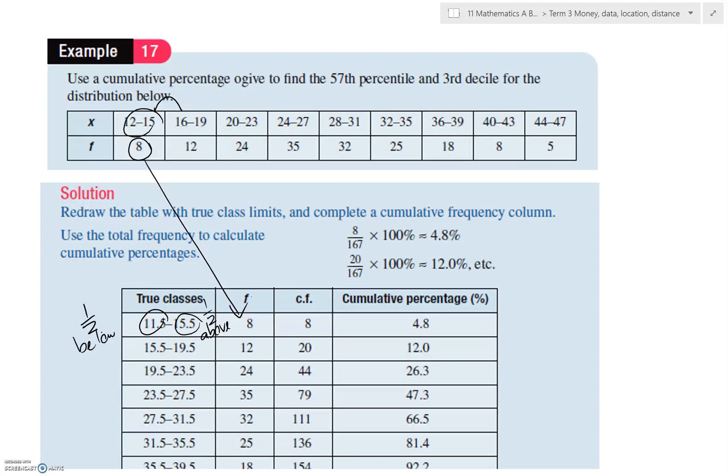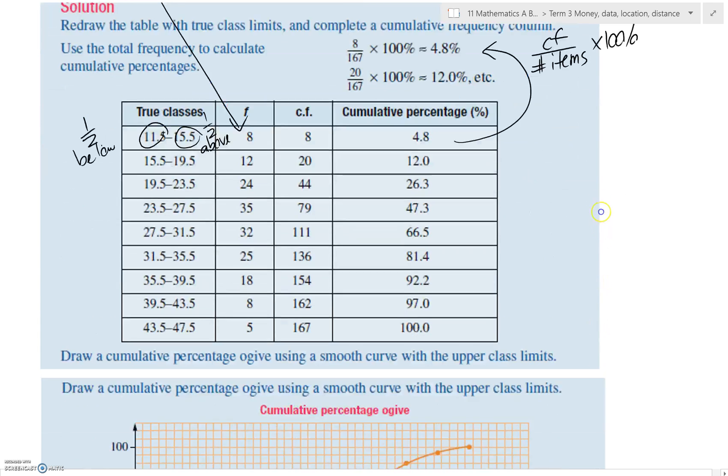Just adding the totals to the previous total. Now the cumulative percentage shows you here how it's calculated. And it's just the cumulative frequency over the total number of items and multiply it by 100% to turn it into a percentage. So that's how that one is calculated.